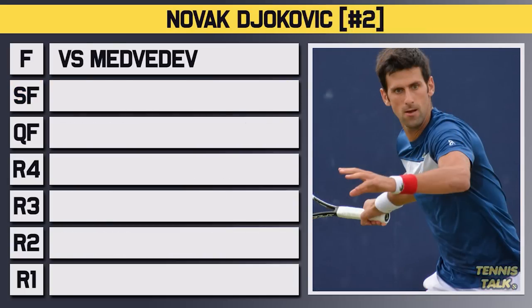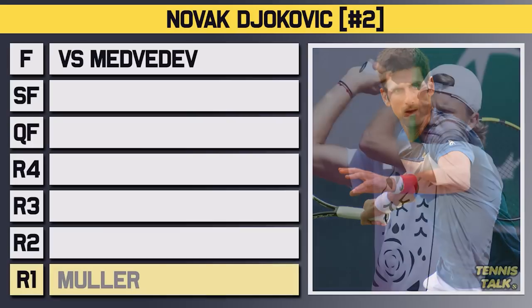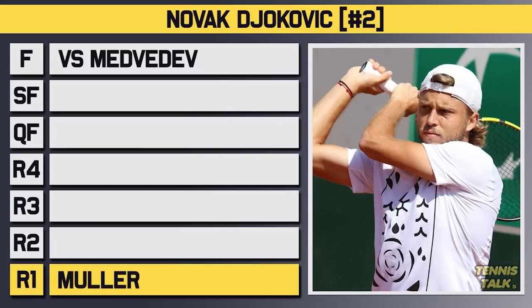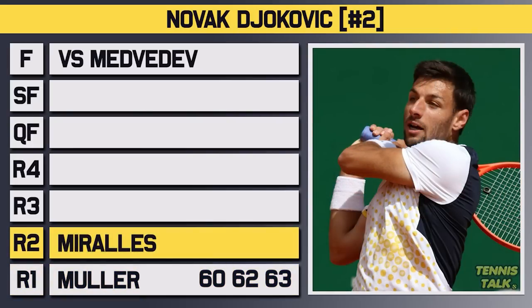Djokovic started the tournament as the number 2 seed and would take on Muller in the first round — no problem getting through in straights 6-0, 6-2, 6-3. In the second round he'd take on Marais and again no problem getting through in straights 6-4, 6-1, 6-1.